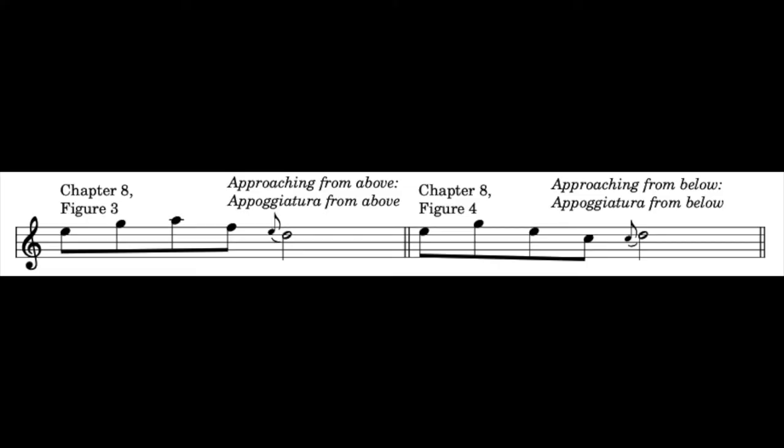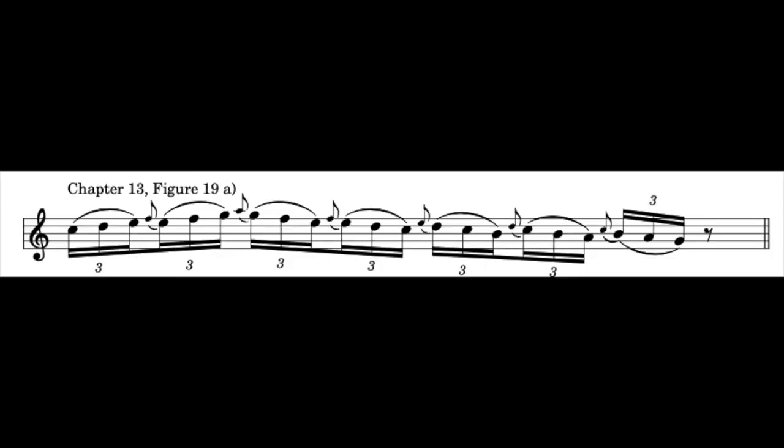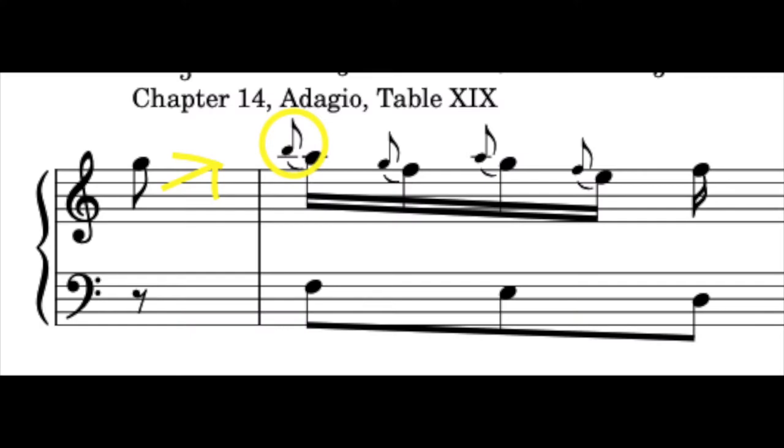An appogiatura uses a gentle articulation with a little swell and is then slurred to the following note. When the melody leaps, appogiaturas are not generally used. When the melody approaches the main note from above, you can add an appogiatura from above, and vice versa. However, in Kwanza's example of how to ornament an adagio on page 154, he seems to let go of this rule sometimes — for example in a run of 16th note triplets. And when dealing with the tiers coulée, Kwanza will often add a falling unaccented appogiatura to the first note already, even if the melody did not arrive from that direction.